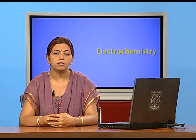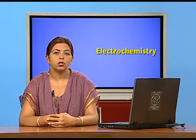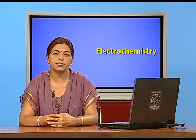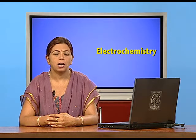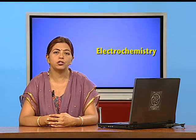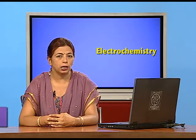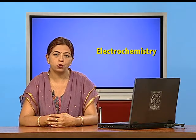Dear students, in the previous class, I have explained you the working of the standard hydrogen electrode, that is the reference electrode to measure the cell potentials of various half cells. I have also explained you the formula to calculate standard electrode potential, that is E naught equals E cathode minus E anode.